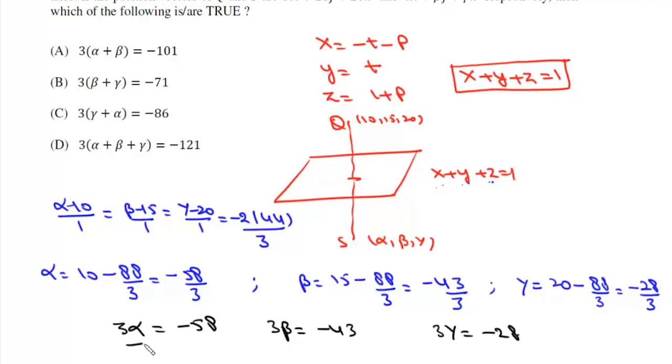Now we need 3(α+β). Now if we add them it will be -58 and -43 which is -101. Option A is correct. Now if we add these two, -43 and -28, this is -71. Option B is correct.